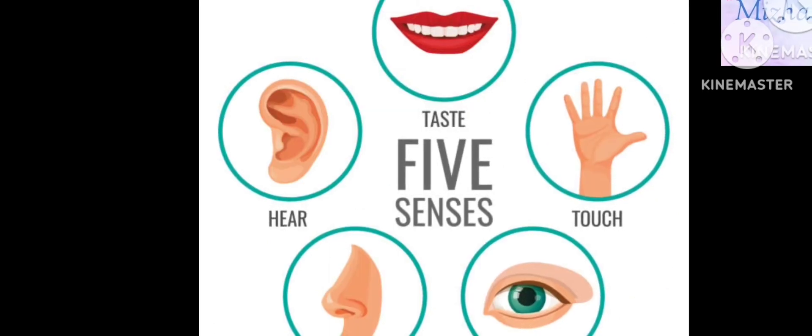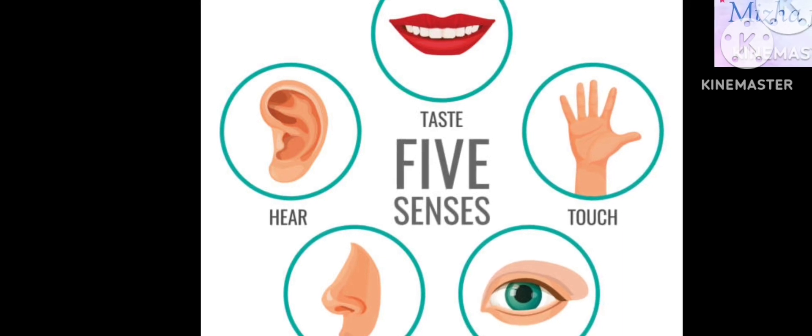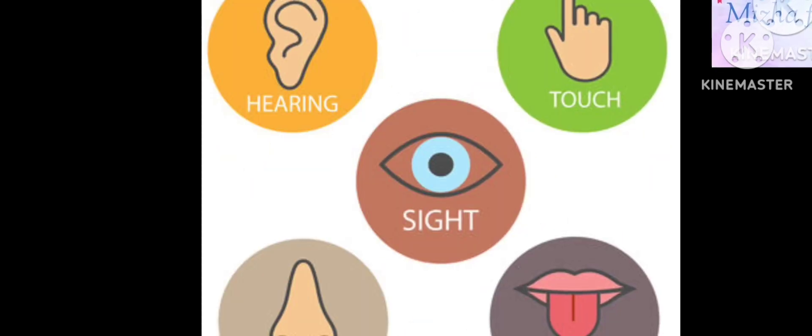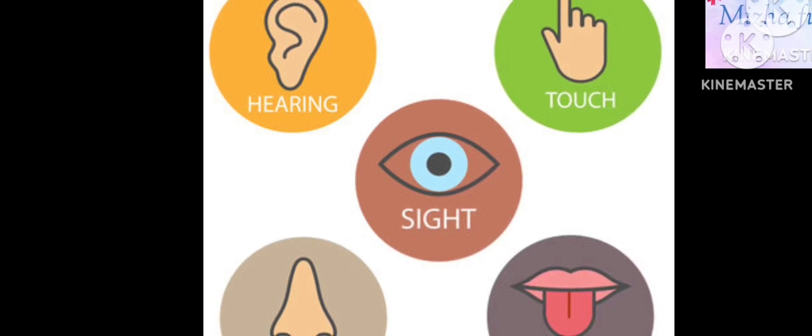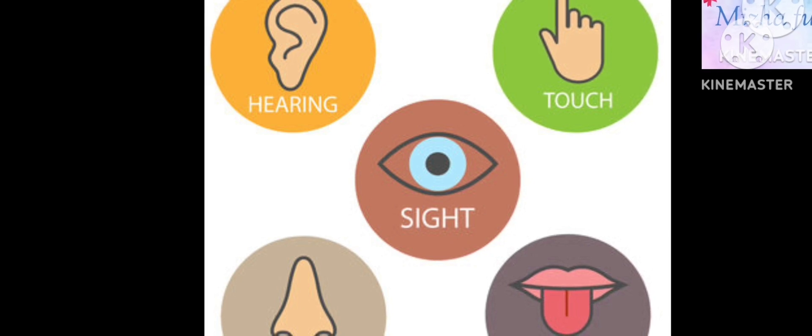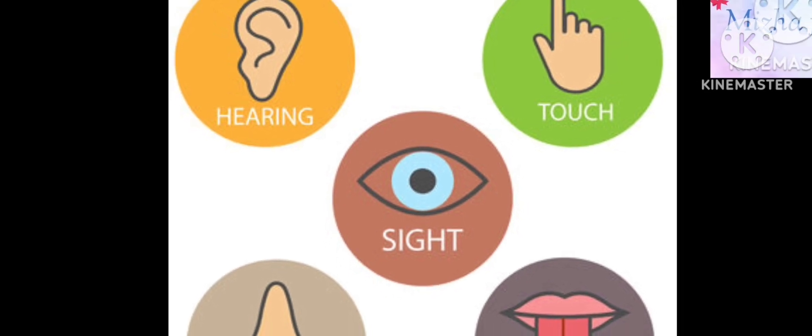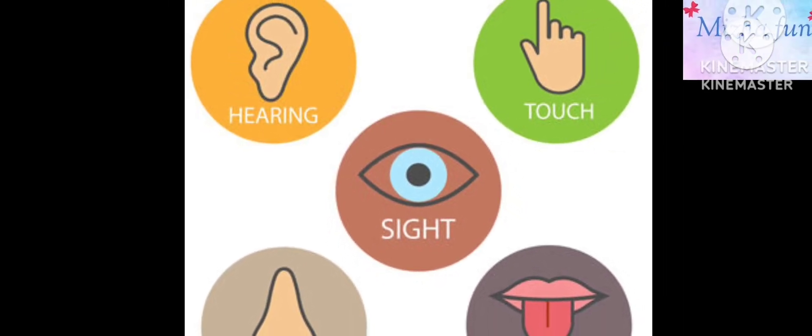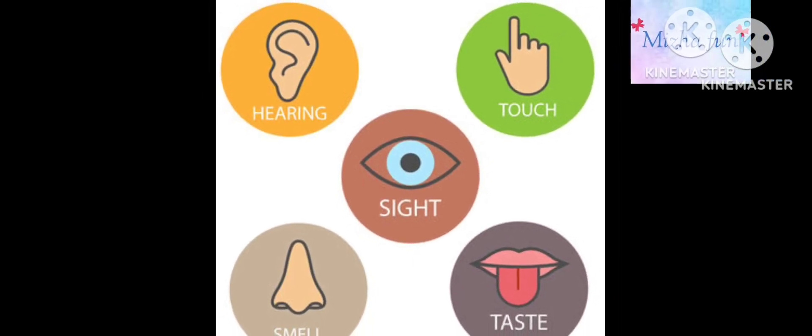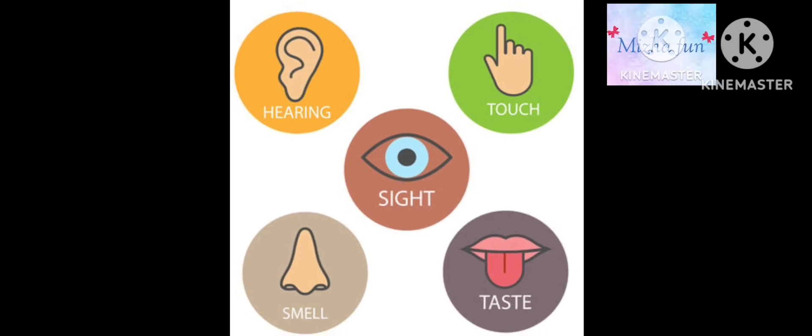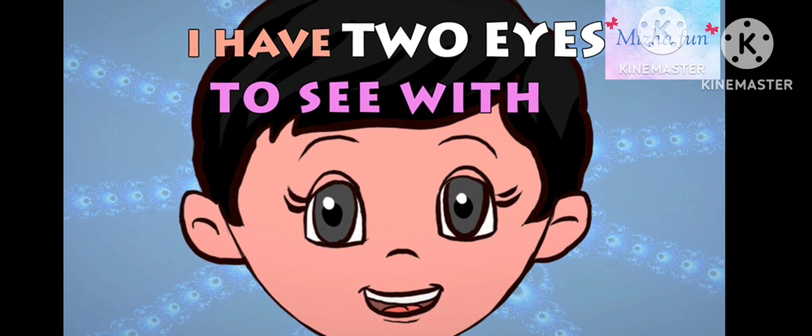The five sense organs. Our senses allow us to know the world better. There are five sense organs: eyes, nose, ears, tongue, and skin. The eyes are to see, the nose is to smell, the tongue is to taste, the skin is to feel, and the ears are to hear.